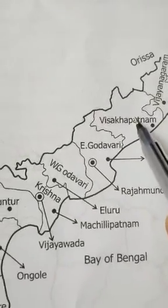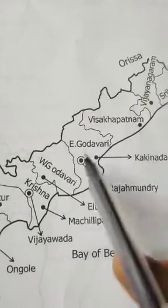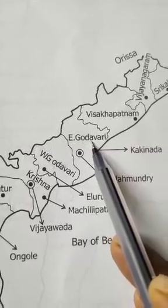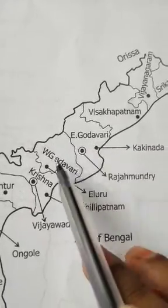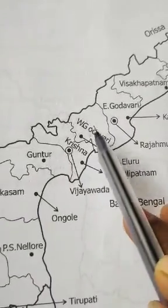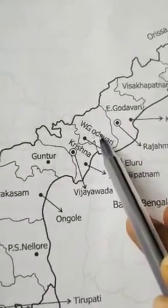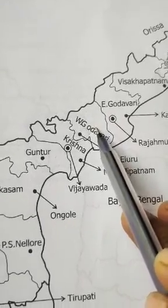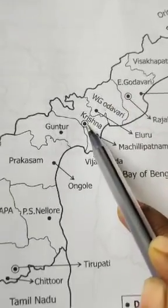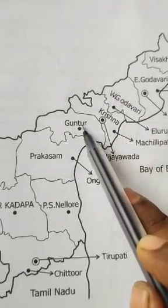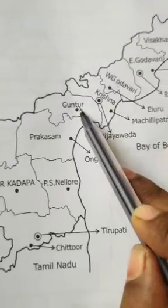And this one, East Godavari. And this is West Godavari. West Godavari down — Krishna.